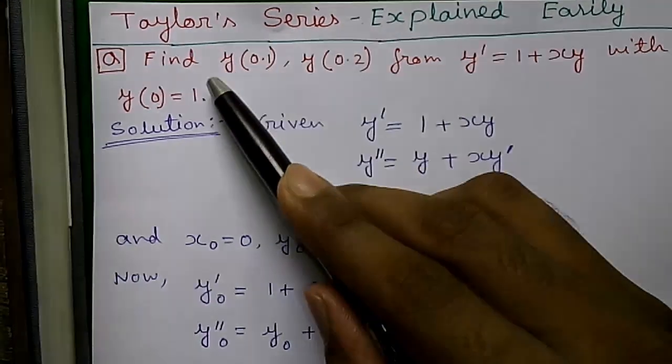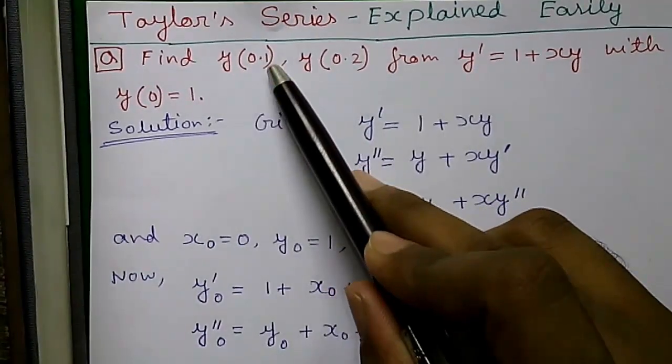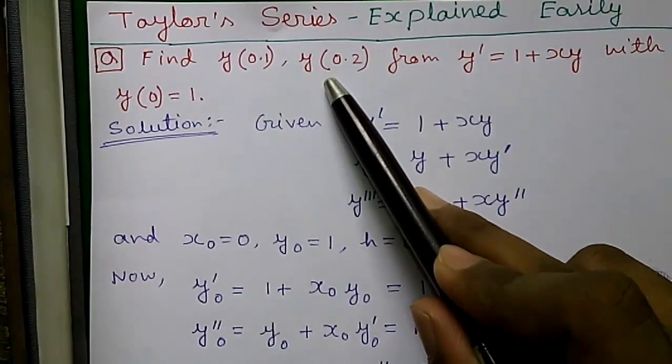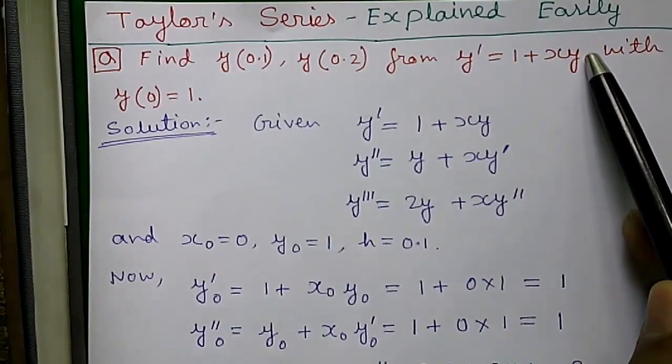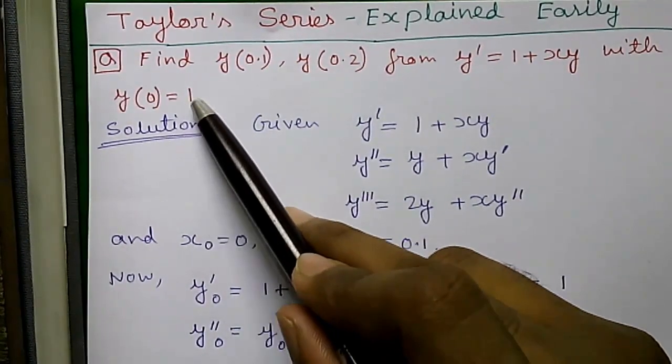So let's start. Our question is find y(0.1) and y(0.2) from y' = 1 + xy where y(0) = 1.